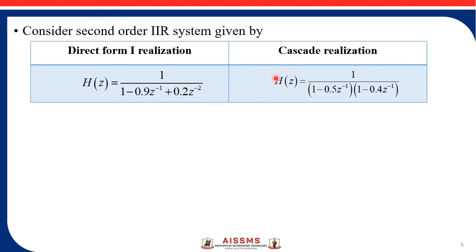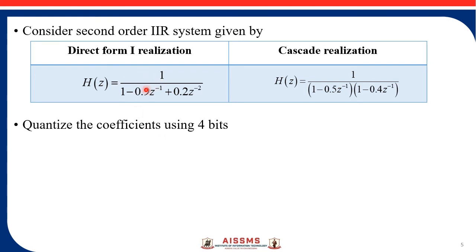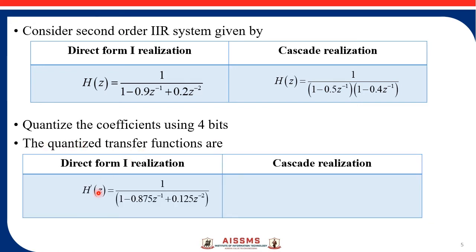The system function for the cascade realization is in the factor form. Now let us quantize the coefficients of this system using 4 bits. The quantized transfer functions are: for the direct form 1 realization, this is the quantized transfer function, and for the cascade realization, this is the quantized transfer function.